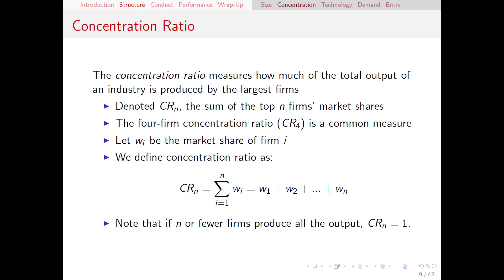Let's talk about a few different ways to measure concentration. The first is relatively simple: the concentration ratio, or CR for short. The concentration ratio is simply the total share of industry output produced by the largest N firms, where N is a number you pick. To calculate the CR for the top N firms, we simply add up the market shares of the top N firms. You can use any number — CR3, CR10, whatever you like. However, the four-firm concentration ratio, or CR4, is the most commonly used.